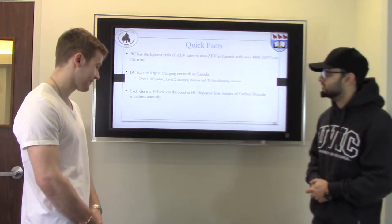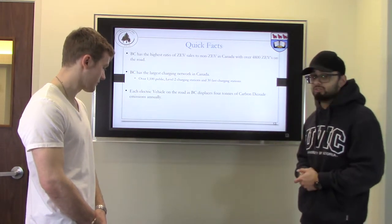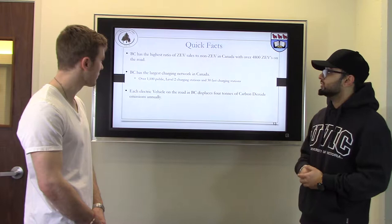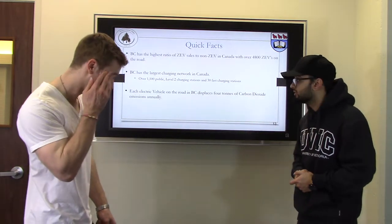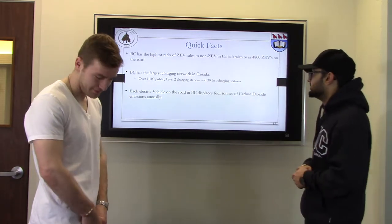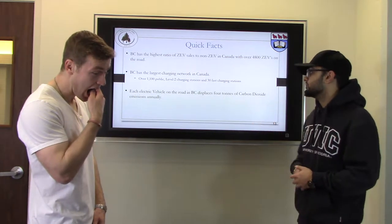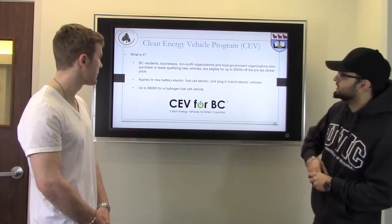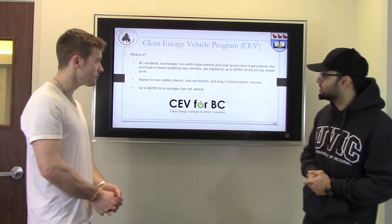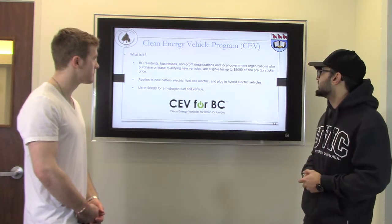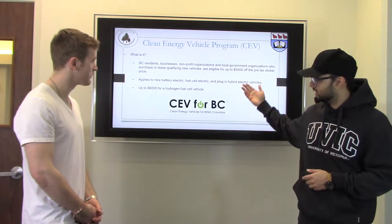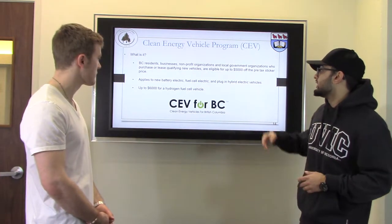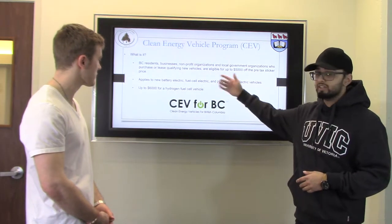BC has the highest ratio of zero emission vehicles to non-zero emission vehicles in Canada, with over 4,800 zero emission vehicles on the road. BC also has the largest charging network in Canada with over 1,100 public Level 2 charging stations and 30 fast charging stations. Each electric vehicle displaces about 4 tons of CO2 emissions annually. The Clean Energy Vehicle program offers BC residents, businesses, non-profits, and local governments up to $5,000 off the pre-tax sticker price of new battery electric, fuel cell electric, and plug-in hybrid vehicles, or up to $6,000 for hydrogen fuel cell vehicles.